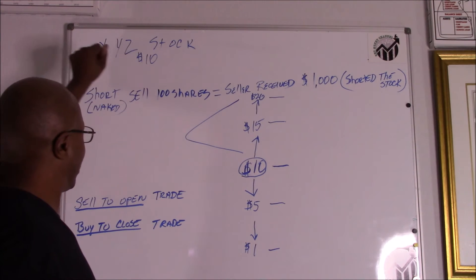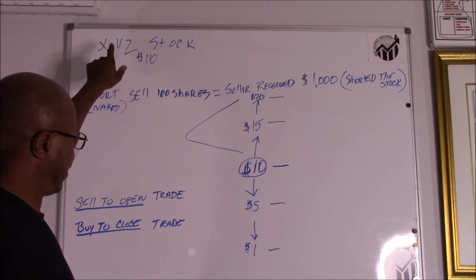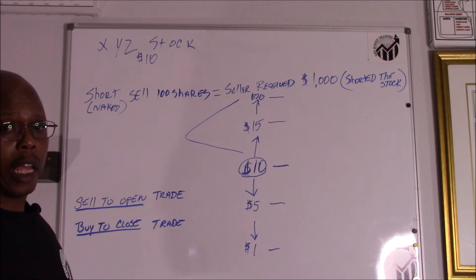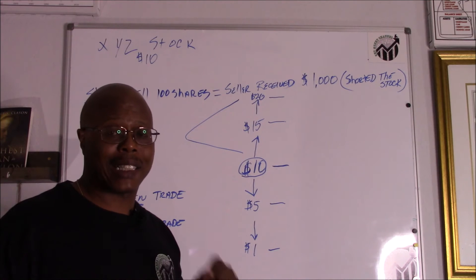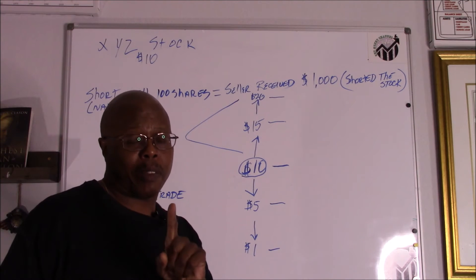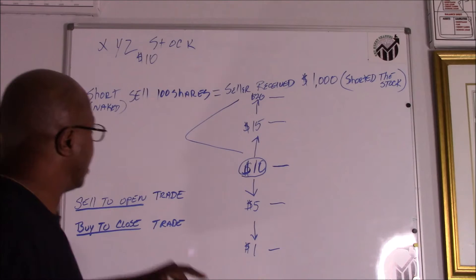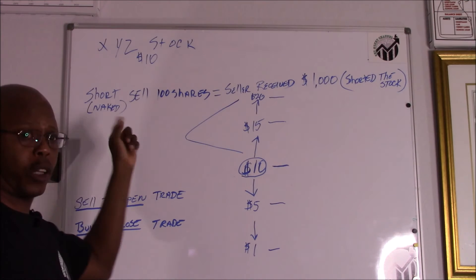Here's the down and dirty on a short sale. Basically this is how it works. Let's say you take a company, XYZ Company, and the current stock price of that company is $10. And you believe that the price of the stock is going to go down.